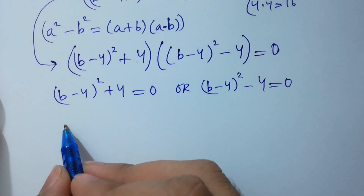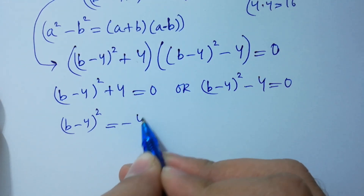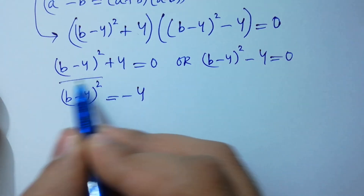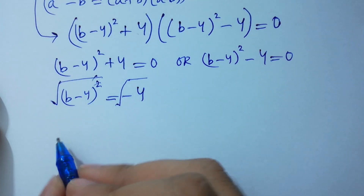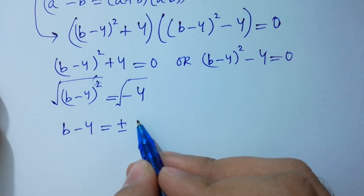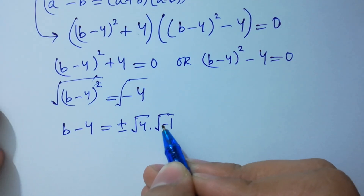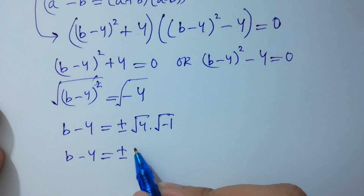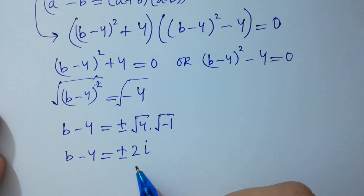So, (b-4)² = -4. Taking the square root on both sides, the square will be cancelled. So b-4 = ±√4 · √(-1). That gives b-4 = ±2i, since √(-1) = i from complex numbers.